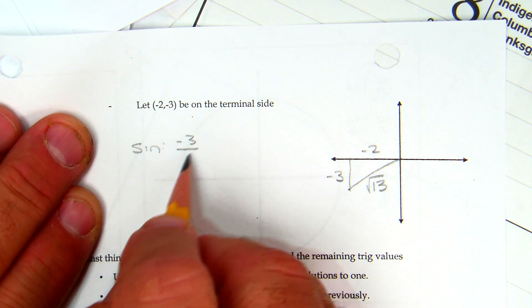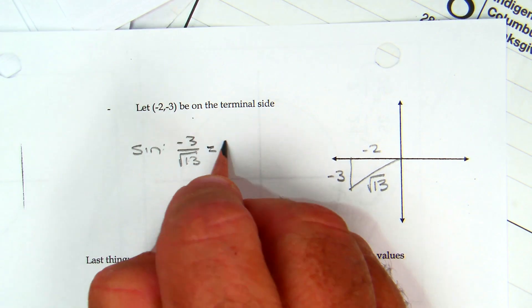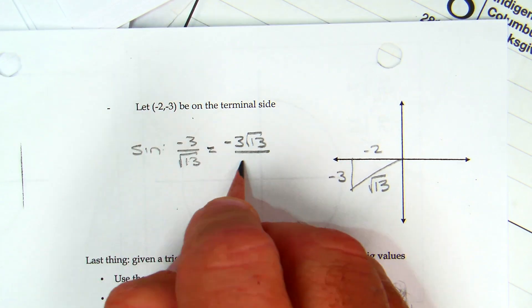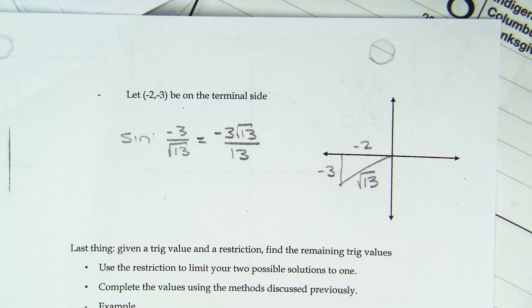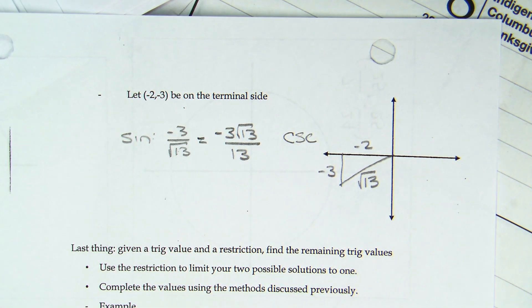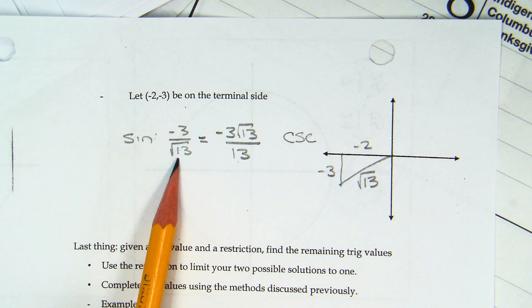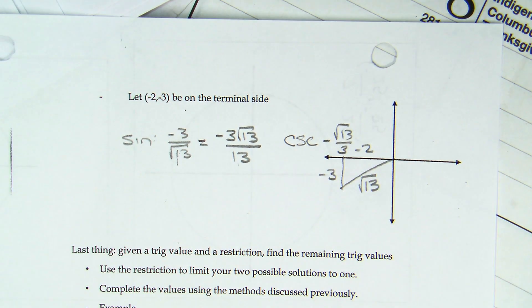Sine is opposite, which is the negative three, over the hypotenuse, which is the square root of thirteen. And then you would have to rationalize the denominator. I'm going to end up with negative three square root of thirteen over thirteen. And then what's the inverse of sine? Cosecant. When you flip, I wouldn't flip your final answer. I would flip the original value. You don't have to worry about rationalizing. So that would just be negative root thirteen over three. And then you would do the same thing, obviously, with cosine and tangent.